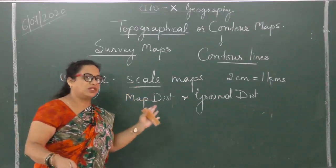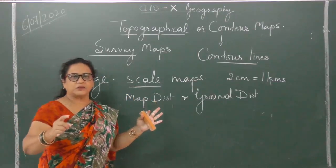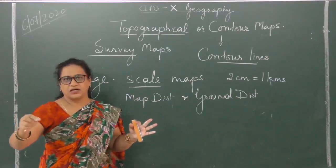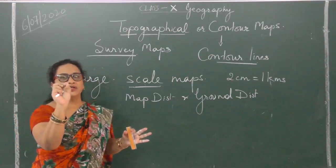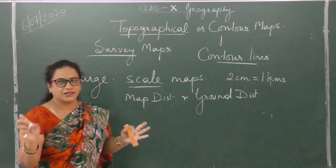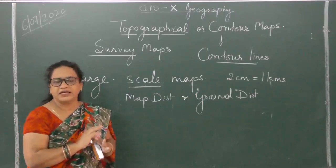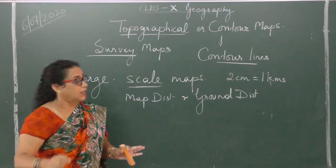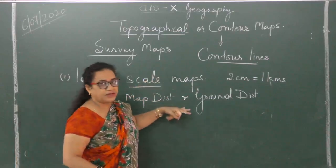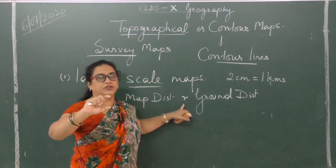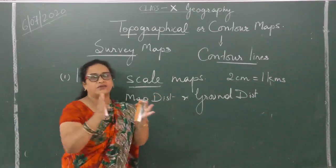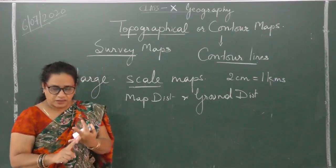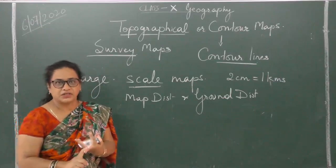Atlas maps are small scale maps. In an atlas map if you are looking for Ranchi — the capital city of Jharkhand — it is just a small dot, and we can't make out anything else about it other than that it is a capital city. But in a survey map, Ranchi will be shown in great detail — every area with man-made, natural, and cultural features.